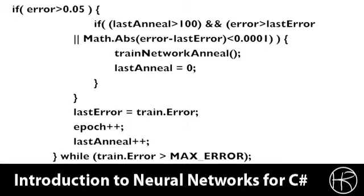If the error is greater than 5%, then we consider possibly invoking simulated annealing. If the last time we have annealed is over 100 iterations — meaning we've done 100 iterations of back propagation — and the error is greater than the last error, meaning back propagation has started to slightly increase the error, which means it is no longer that effective, then we train with simulated annealing.